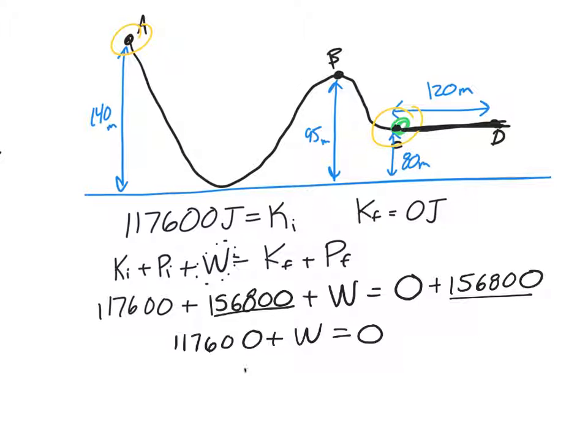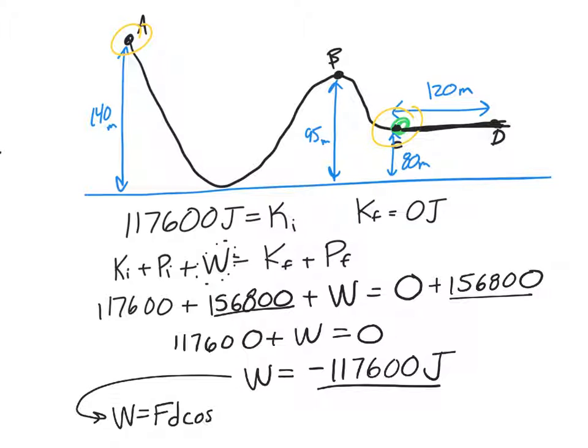So how much work was done? Well, work is negative 117,600. The work is getting rid of that kinetic energy. So that is the amount of work that's going to have to be done. They did not ask us for the work, they asked us for the force. So we can now do work is equal to force times distance times the cosine of the angle. The scariest part is this cosine of the angle, right? That's going to be negative. Okay, negative 1. How do I know that?